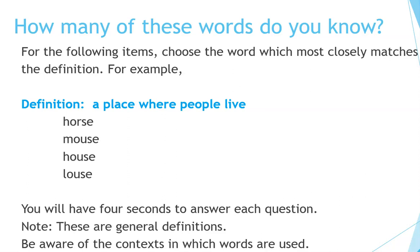How many of these words do you know? For the following items, choose the word which most closely matches the definition. For example, definition: a place where people live. Horse, mouse, house, louse.